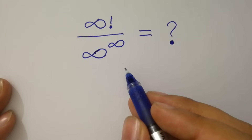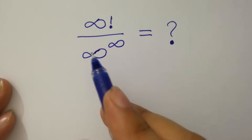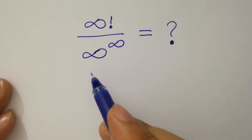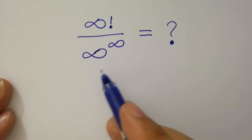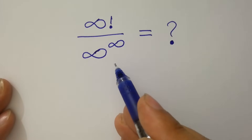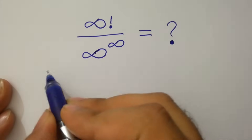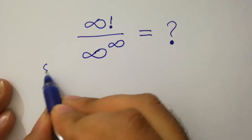Hello friends. Infinity factorial over infinity to the power infinity is equal to what? Let's have a solution.